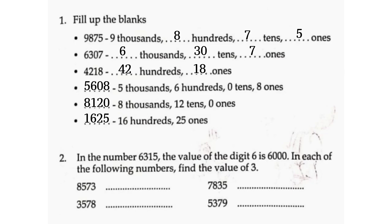In the number 6,315 the value of digit 6 is 6,000. Find the value of digit 3 in each: in 8,573 the value of 3 is 3. In 7,835 the value of 3 is 30. In 3,578 the value of 3 is 3,000. In 5,379 the value of 3 is 300.